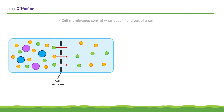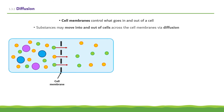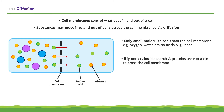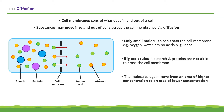In cells, the cell membranes control what goes in and out of them. Substances may move into and out of cells across the cell membranes via diffusion. Only small molecules can cross the cell membrane, like oxygen, water, amino acids and glucose, whereas big molecules, like starch and proteins, are not able to cross the cell membrane. The molecules move from an area of higher concentration to an area of lower concentration.